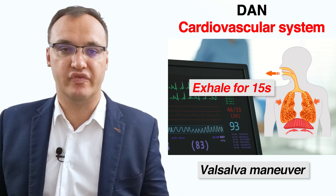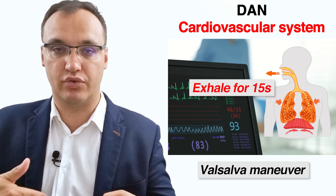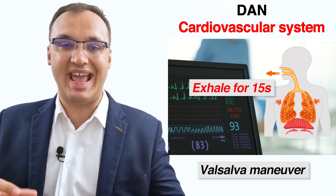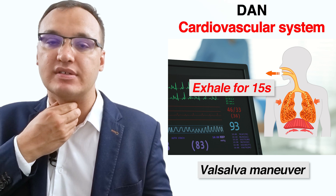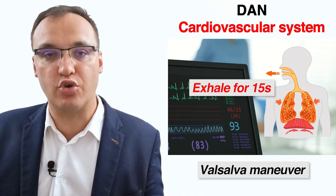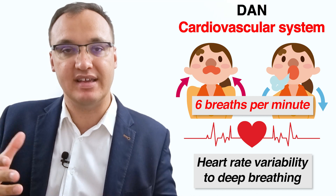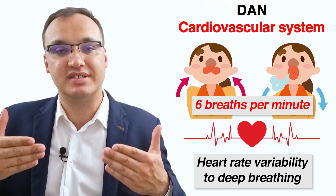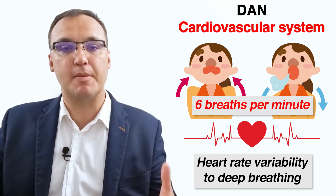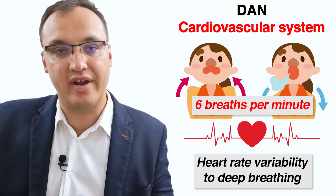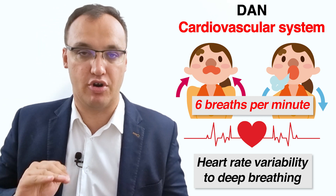In the standard Valsalva maneuver, the patient lies down facing upward, connected to an ECG monitor, and then forcibly exhales for 15 seconds against a fixed resistance with an open glottis — similar to straining during a bowel movement. In the heart rate variability deep breathing test, the patient lies quietly and breathes deeply at a rate of about 6 breaths per minute. This produces maximum variation in heart rate, while a heart monitor records the difference between the maximum and minimum heart rate.